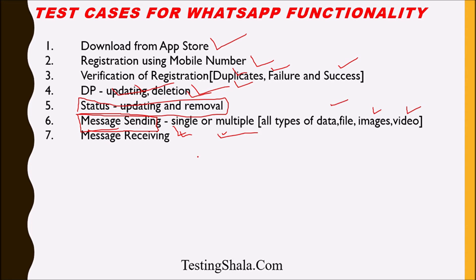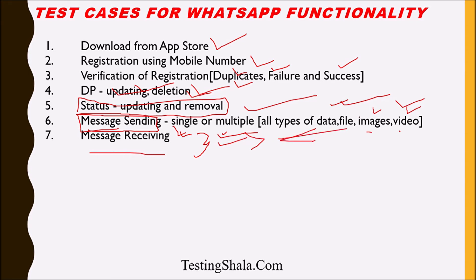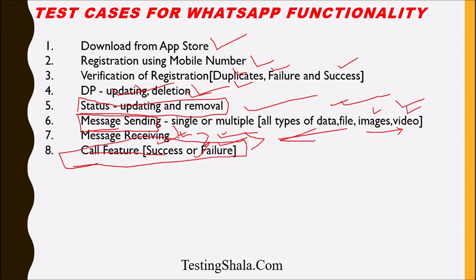The seventh test case is receiving messages. Once you send messages with data or attachments, you should verify on the receiving side that whatever was sent from one phone is received on the other phone in a consistent and complete manner, without any loss of data.